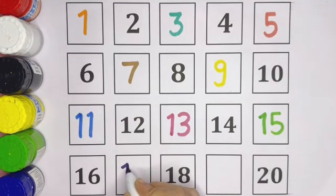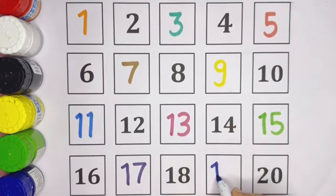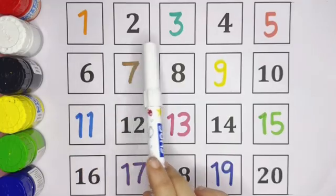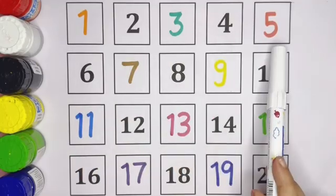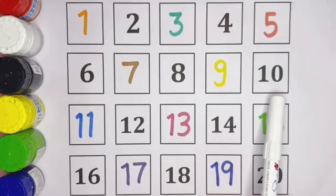Sixteen. The missing number is seventeen, one-seven, seventeen. Eighteen, eighteen. The missing number is nineteen. Now the numbers are complete, kids. One to twenty: one, two, three, four, five, six, seven, eight, nine, ten.